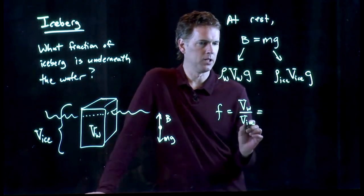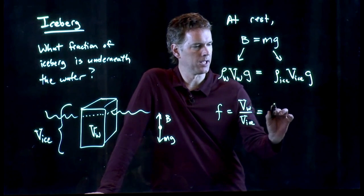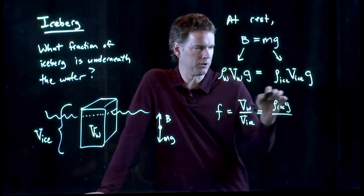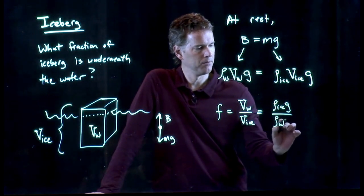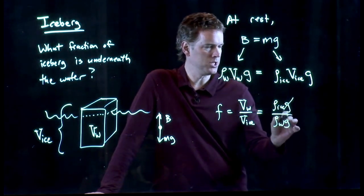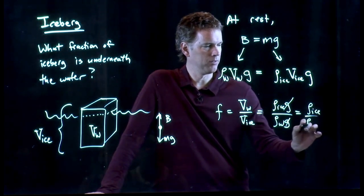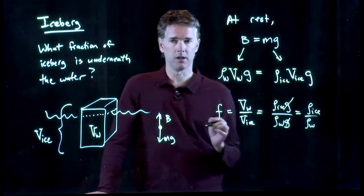And if I look at this equation, if I divide by V ice, then I get rho ice times G. And then I have to divide by rho W times G. The Gs cancel out. And we get density of the ice over the density of the water.